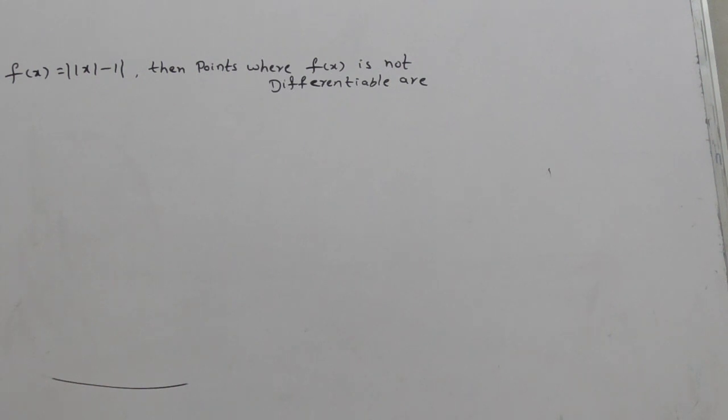By using a simple graph, you can solve this question. The given f(x) is ||x| - 1|. First, draw what is y equals x minus 1.